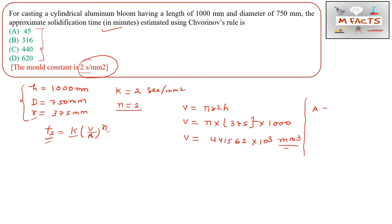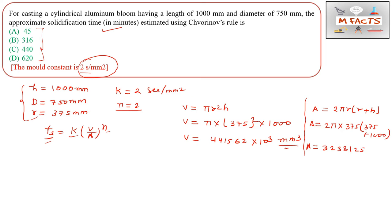Next, calculate the surface area of the cylinder: A = 2πr(r + h) = 2π × 375 × (375 + 1000). This gives A = 323,812.5 mm squared. So we now have both the volume and surface area values needed for the formula.